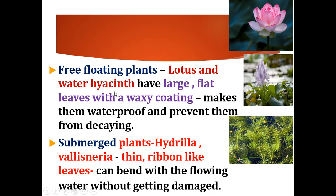In aquatic plants there are two types: free floating plants and submerged plants. Free floating plants like lotus and water hyacinth have large flat leaves with a waxy coating, making them waterproof. Submerged plants like hydrilla and vallisneria have thin ribbon-like leaves that bend with flowing water without getting damaged.